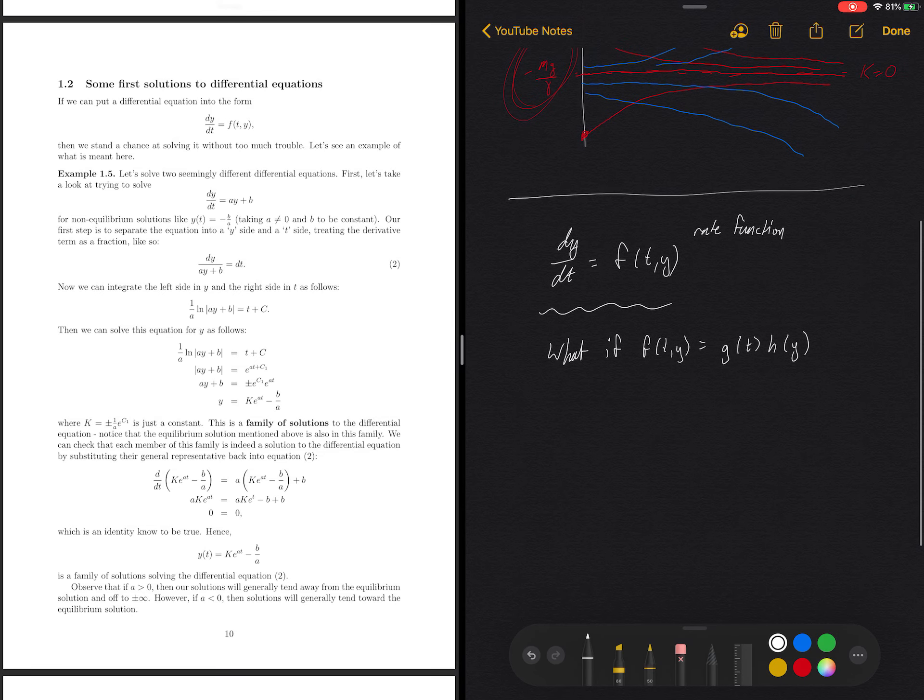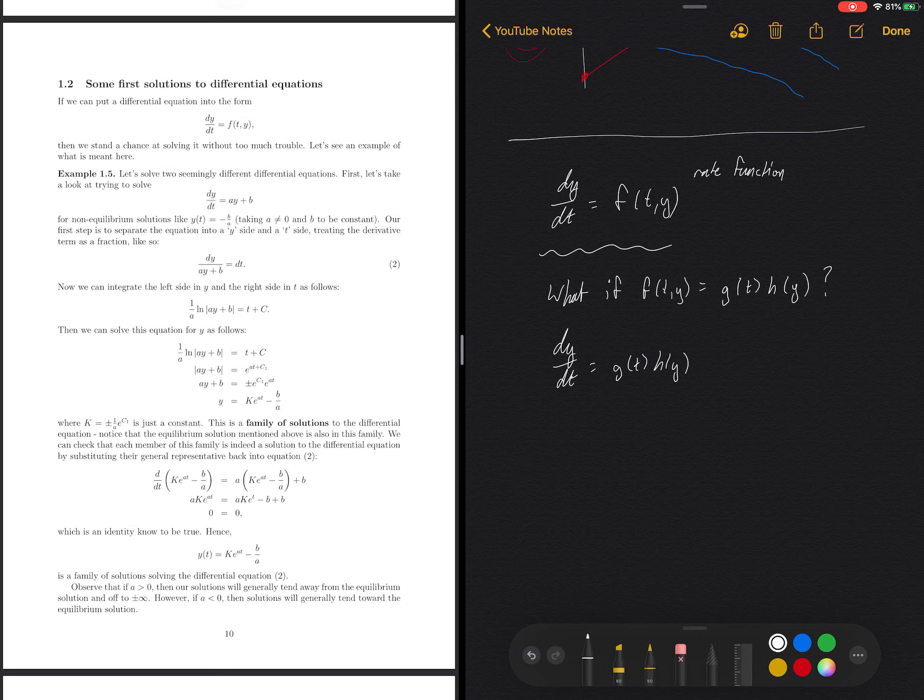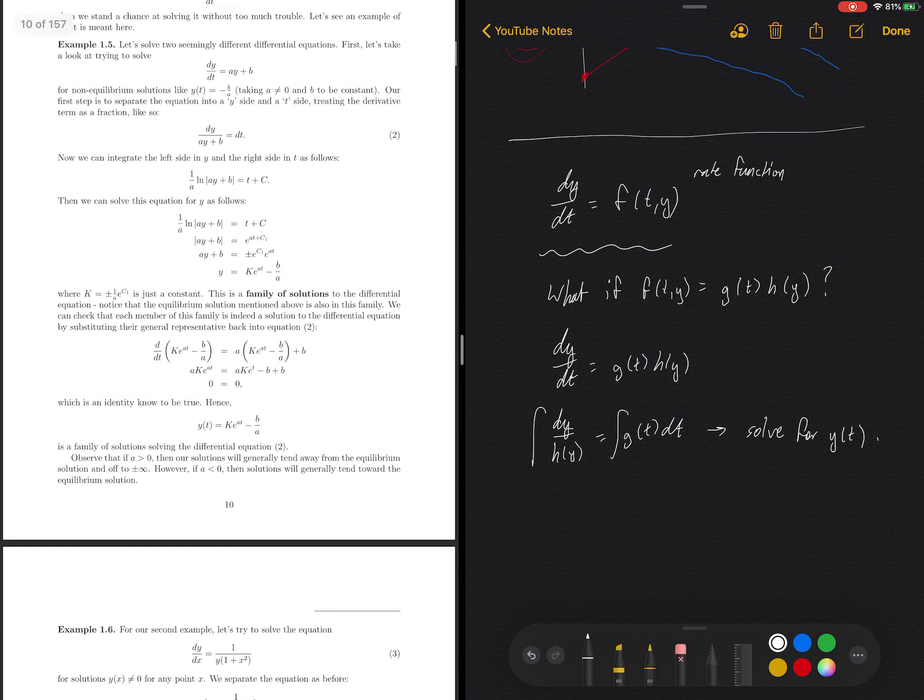What if f of t and y is actually a product of two functions? What if it's a g of t times an h of y? So what if I can separate these guys as their own single variable functions? So what if that's the case? Then that would mean dy dt is equal to g of t times h of y. And then I could try to separate just like I did last time. So dy divided by h of y would be equal to g of t times dt. And then I could integrate. And hopefully I'd be able to integrate explicitly and then solve for y of t.